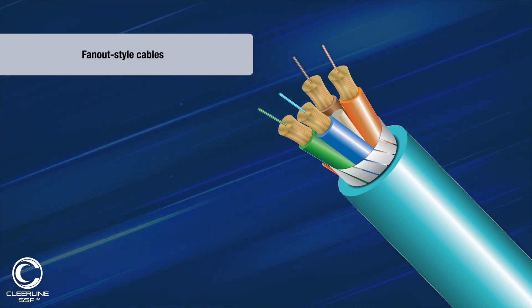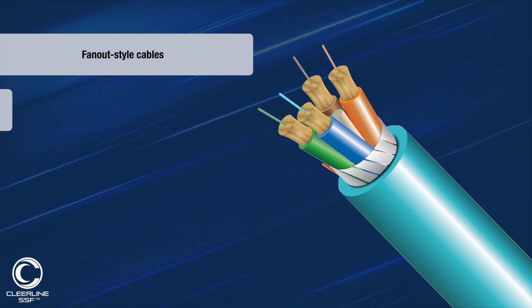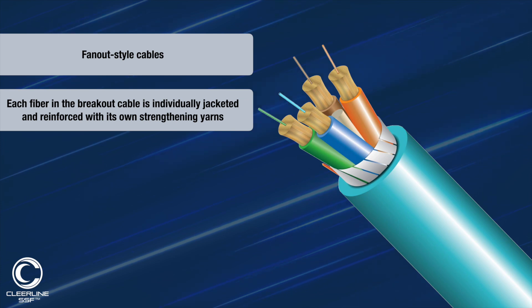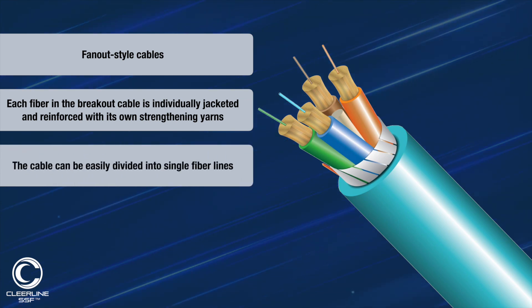Fan-out essentially adds a jacket to the fine strands found within a micro distribution cable. Because each fiber in the breakout cable is individually jacketed and reinforced with its own strengthening yarns, the cable can be easily divided into single fiber lines.